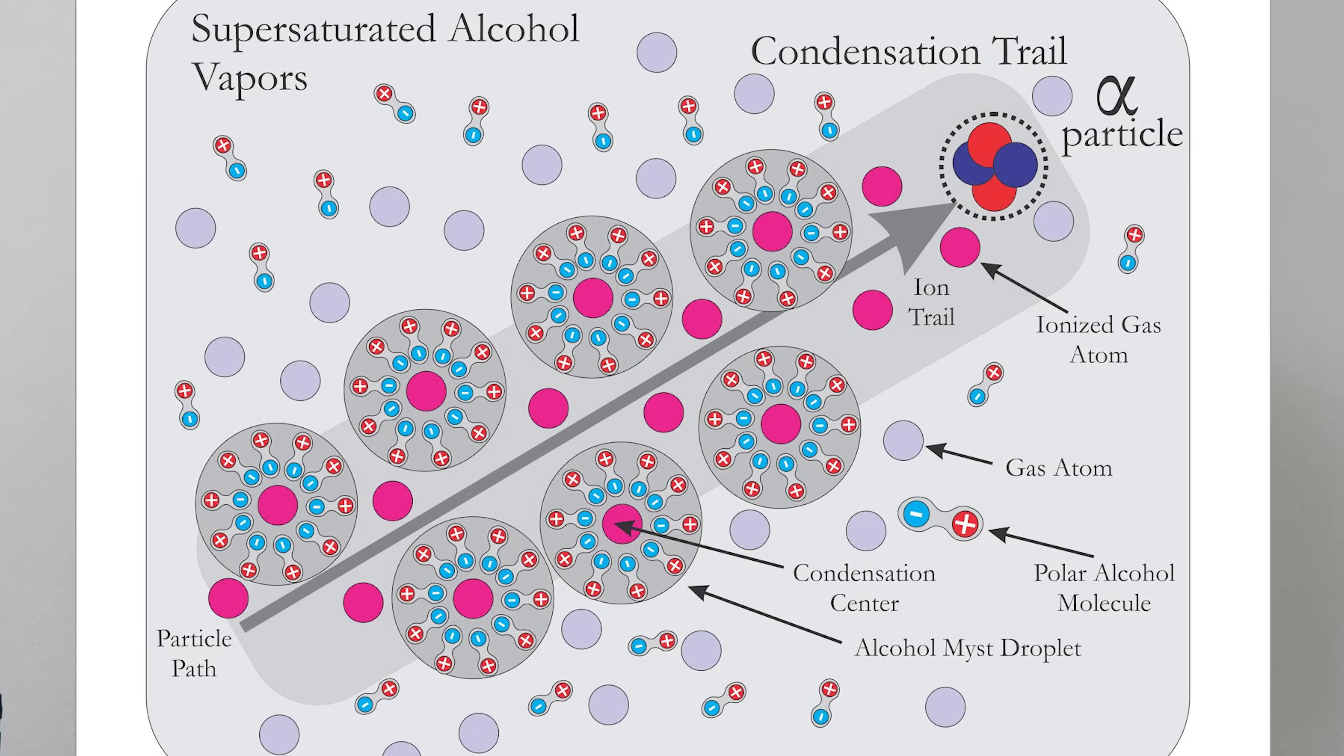One way that we can get this super saturated alcohol to condense is to create ions near it. When particles of radiation fly through the air they can hit into the air molecules and knock electrons off of them. So once they've knocked electrons off those air molecules are now positively charged. And so that can induce the isopropyl alcohol to want to gather around that charge. So it will actually make a small droplet around that positive ion. And so wherever that radiation particle flew through the air you can actually see small droplets form as condensation. This is the basic mechanism by which cloud chambers work.